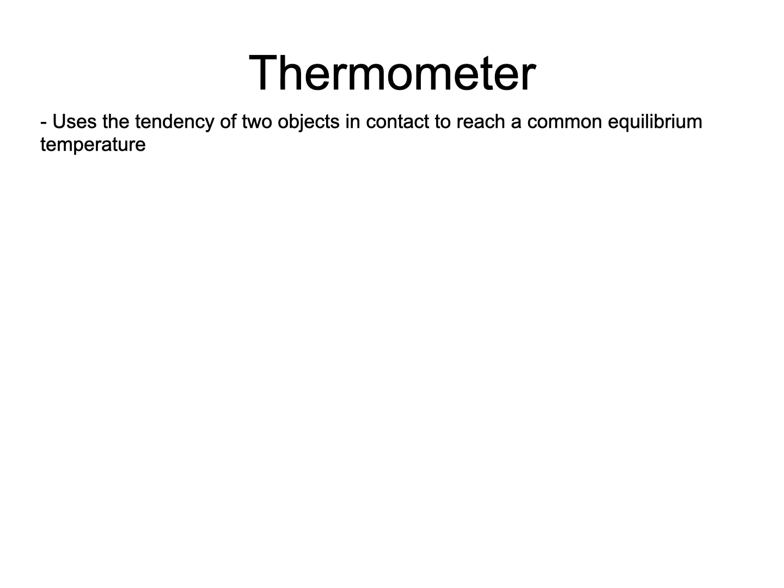Essentially, we need our instrument to exchange energy with the object we are interested in until they both have the same temperature. The second feature involves a characteristic of material that is known to vary with temperature, such as the density. The change of density due to changes in temperature is called thermal expansion.